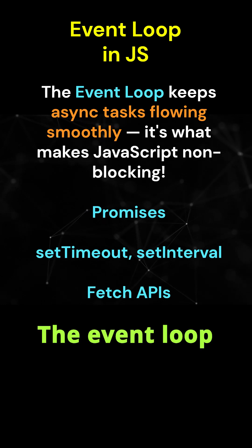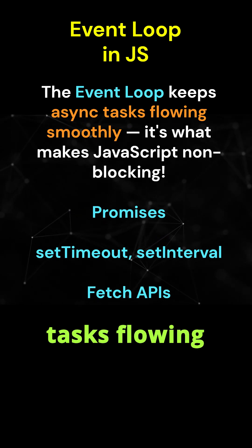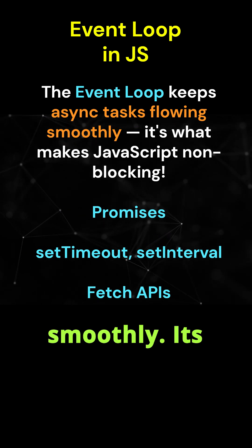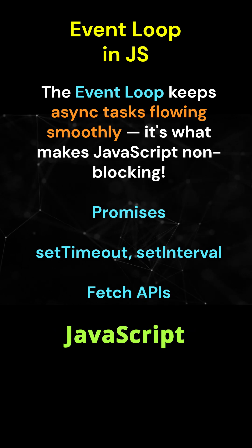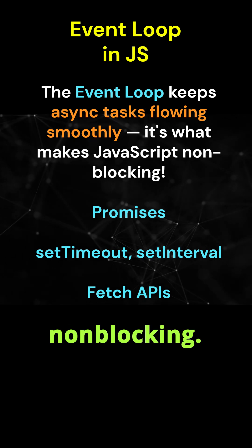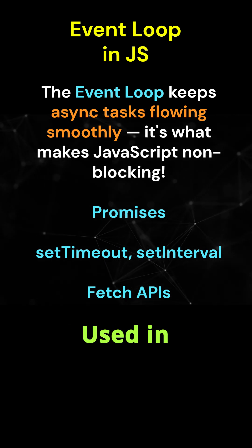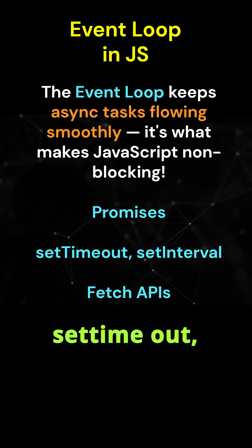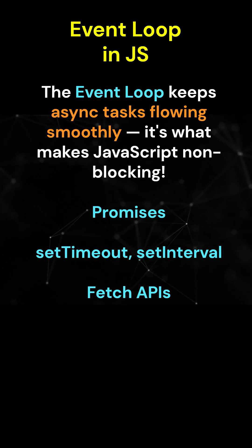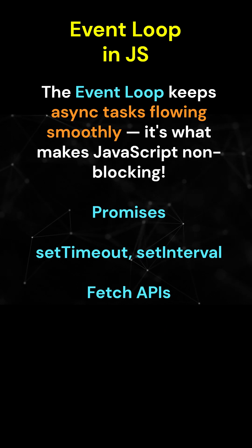The event loop keeps async tasks flowing smoothly. It's what makes JavaScript non-blocking. It's used in Promises, setTimeout, setInterval, and Fetch APIs.